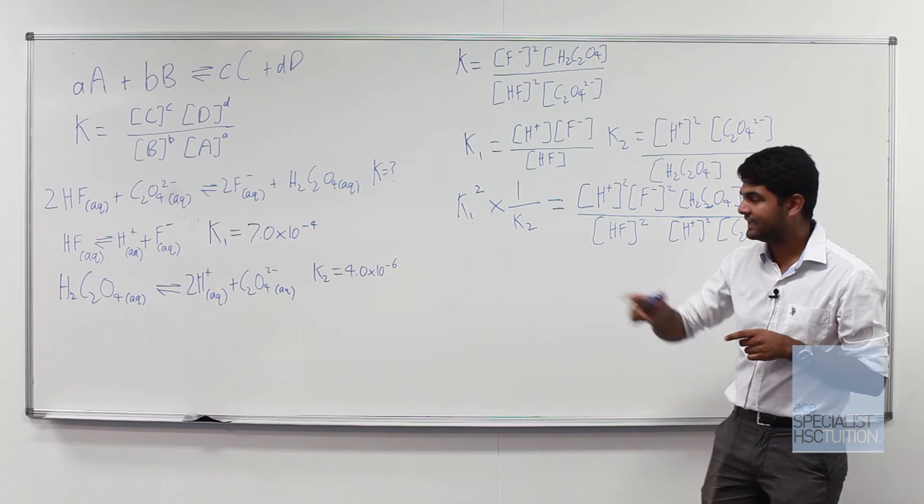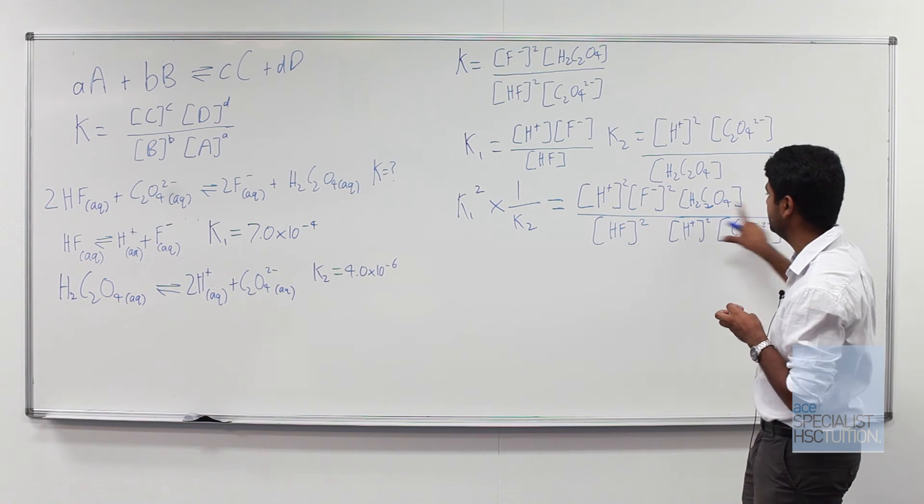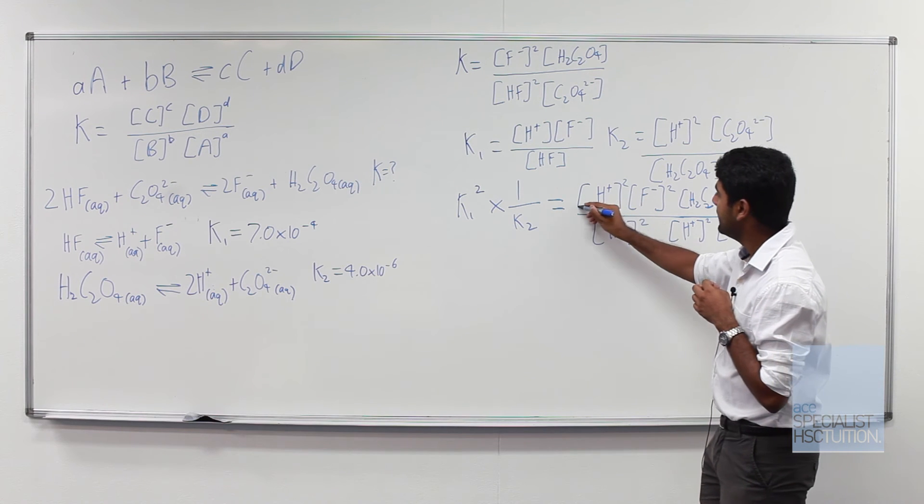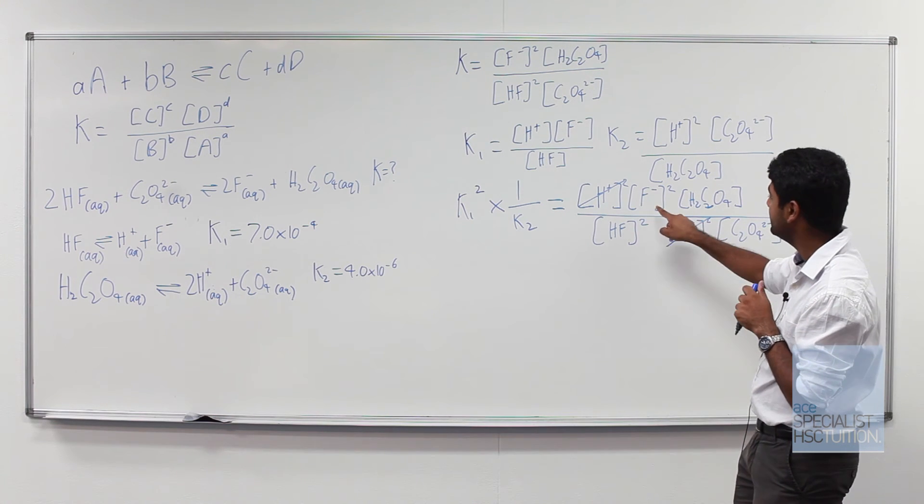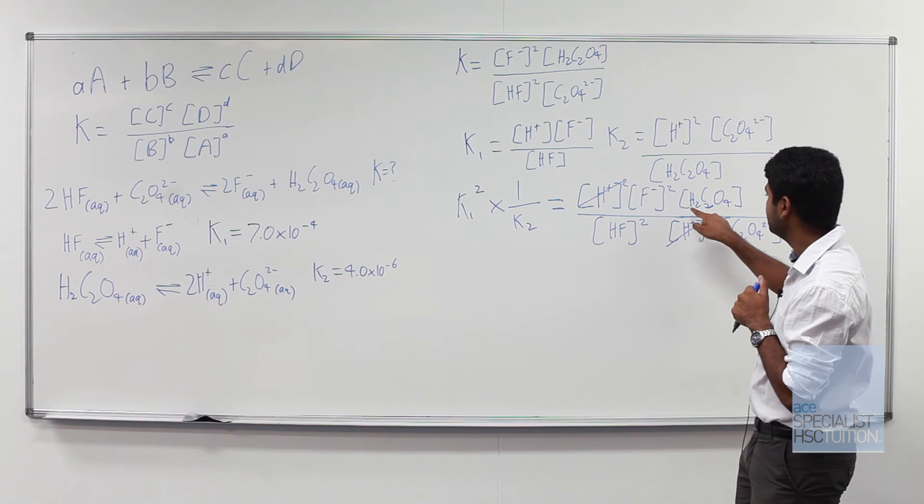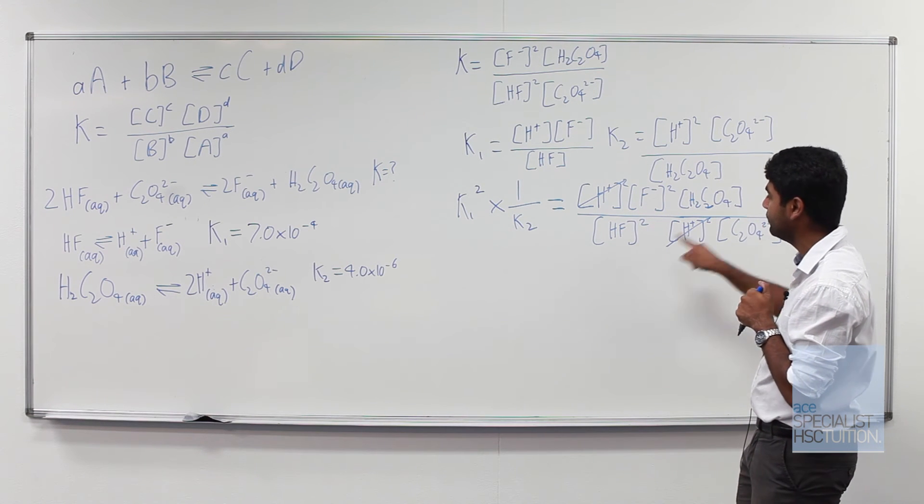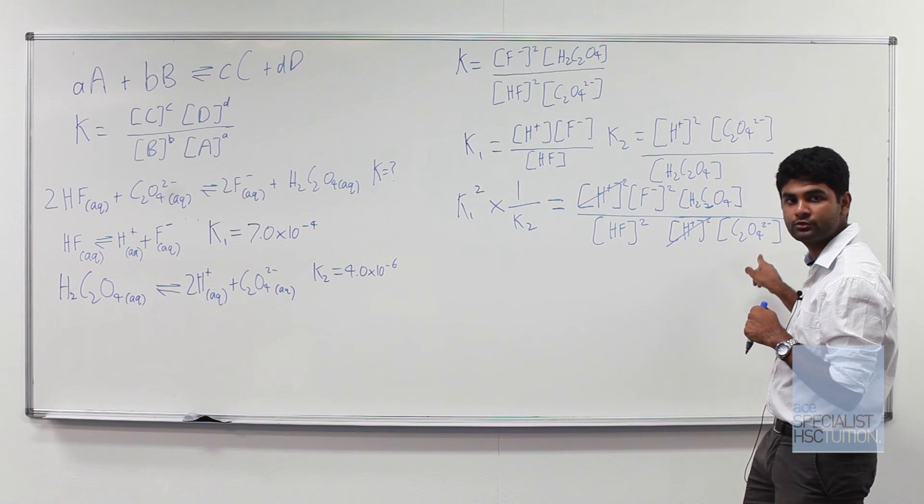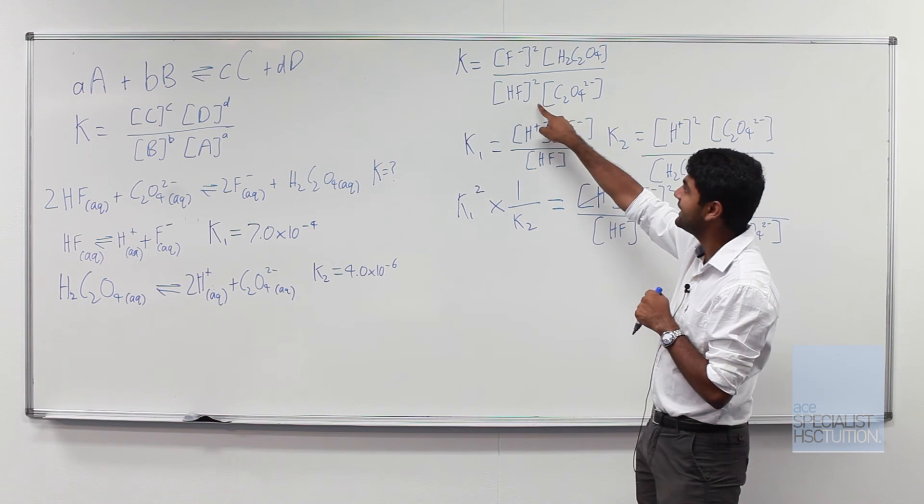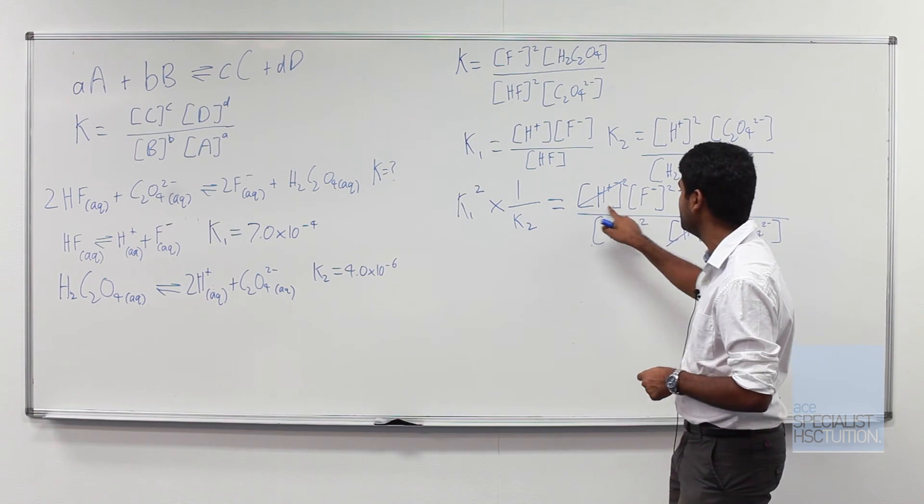So that is what K1 squared multiplied by 1 over K2 gives us. Now if we look here, H+ squared and H+ squared we can cancel out leaving F- squared multiplied by H2C2O4 all over HF squared multiplied by C2O4^2- which is the exact same as K.